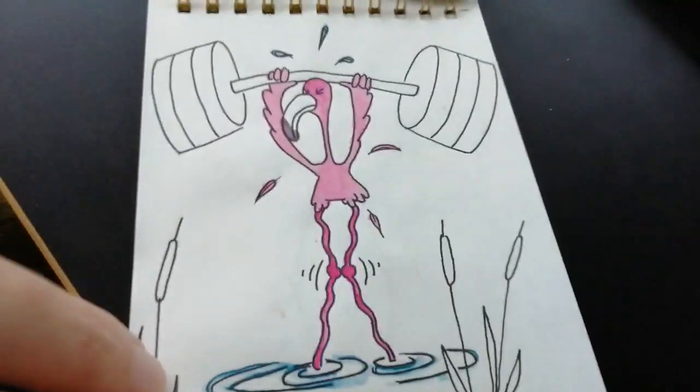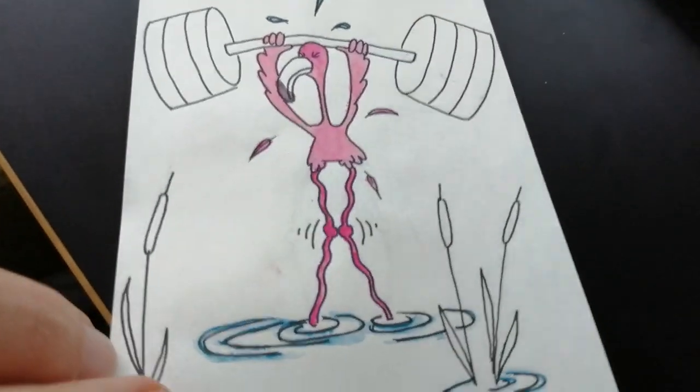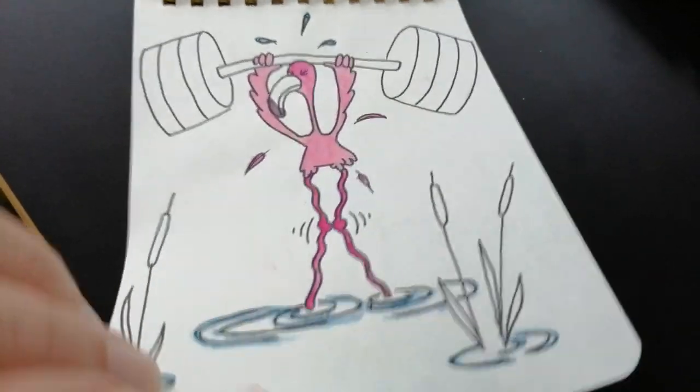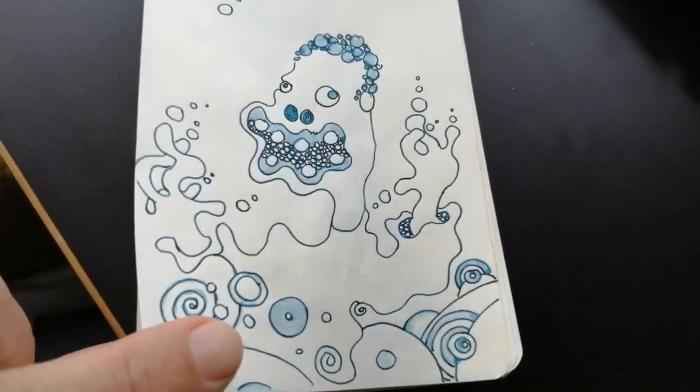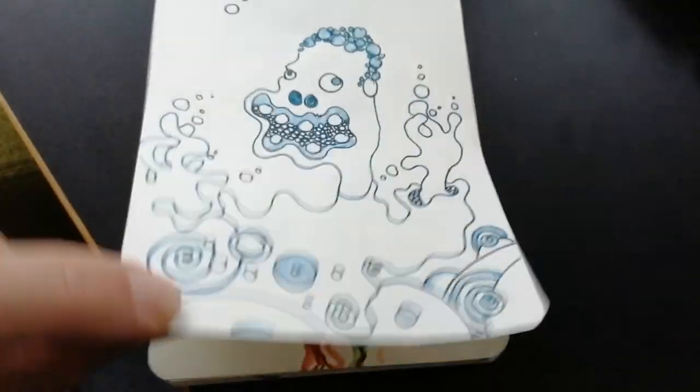Flamingo lifting weights. I should have drawn him on one leg. I have to do that one again maybe. Used a lot of circles to make this.